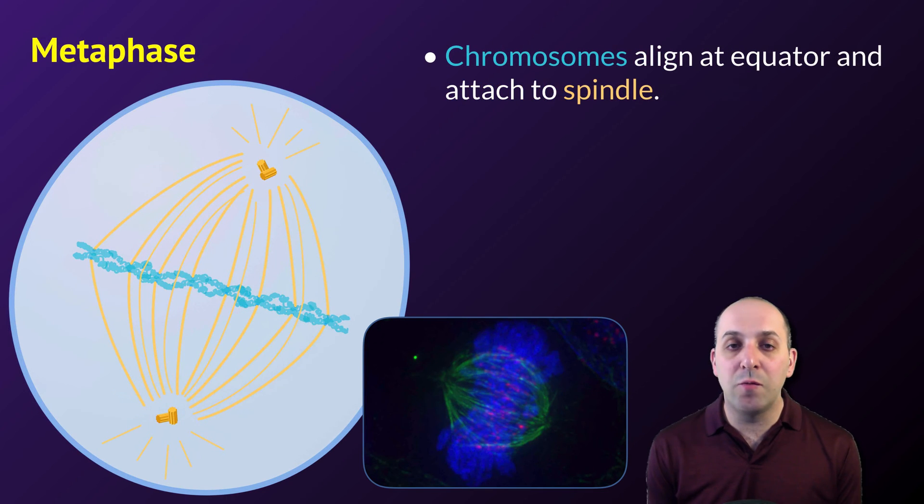Following prometaphase, we move into metaphase, where the chromosomes align at the equator or the metaphase plate of the cell, and they attach to the spindle. Chromosomes attach to the spindle using their kinetochore proteins that are connected to their centromeres. If that seems like a lot of jargon, you should probably go back and look at our chromosome anatomy discussion from earlier on in this presentation.